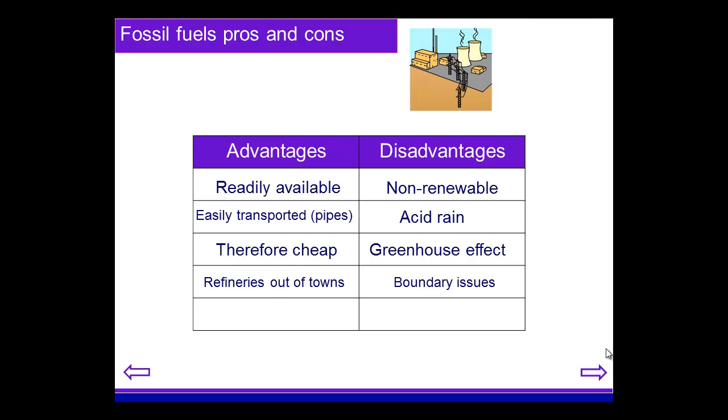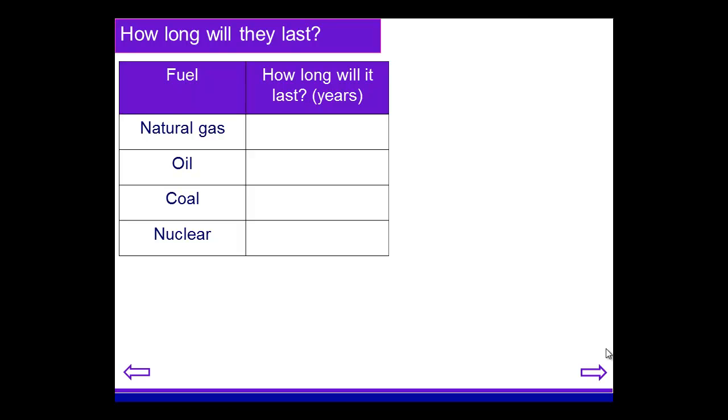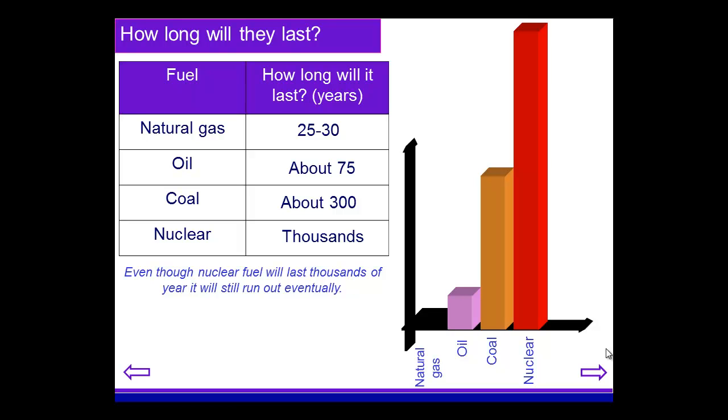The location of oil, gas, or coal can have an impact on international relationships. Not just non-renewable, but they're also running out. Natural gas - we've got potentially 25 to 30 years remaining, though there are more finds taking place so this may be extended. Oil, about 75 years, based on current numbers, though there are new oil finds taking place all the time. Coal, maybe about 300 years, and nuclear could last for thousands of years but will eventually run out. Nevertheless, they're all finite levels.